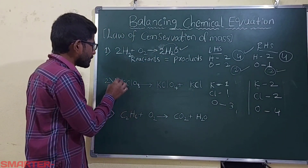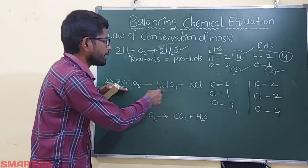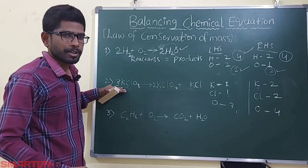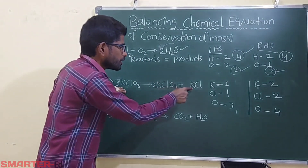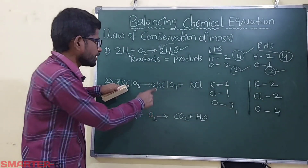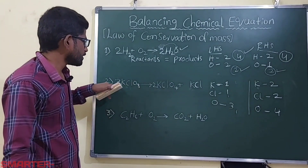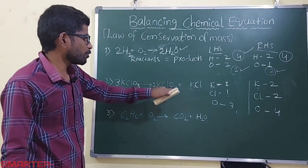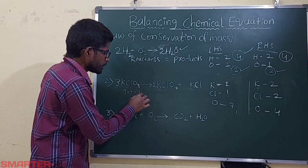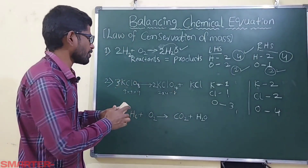Try keeping coefficient 3 on the left. Three K on the left, but the right side has two K and one K — totally three, so potassiums are balanced. Three chlorines on the left, two plus one on the right — balanced. But oxygens: 3 times 3 = 9 on the left. On the right, 3 times 4 = 12? No, we have one set of 4, giving 4 oxygens on the right side. Nine versus four — wrong again.